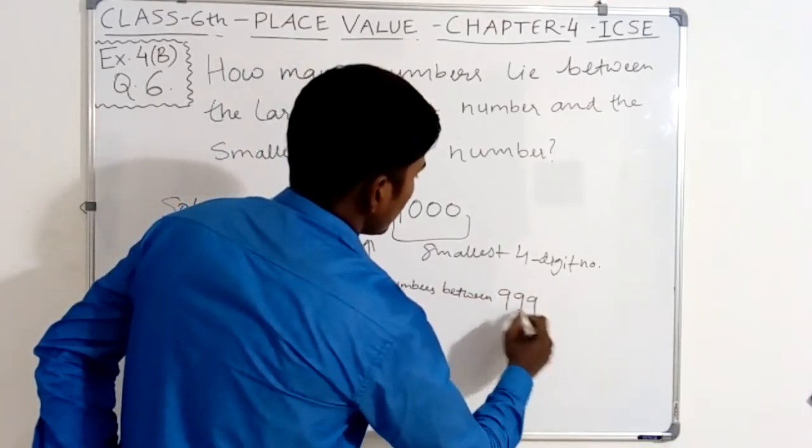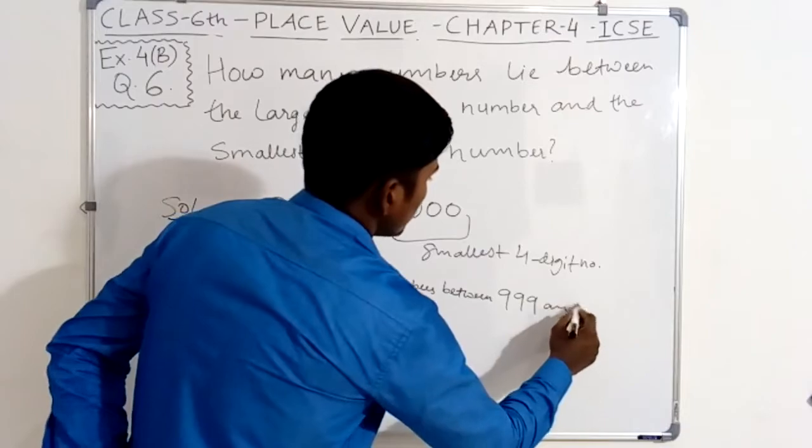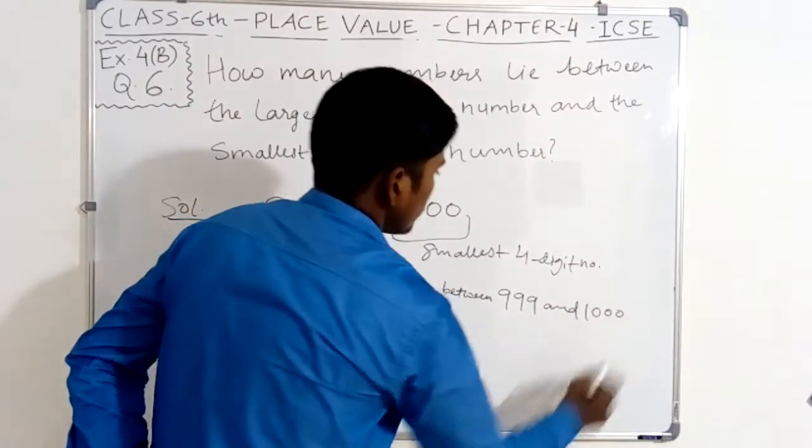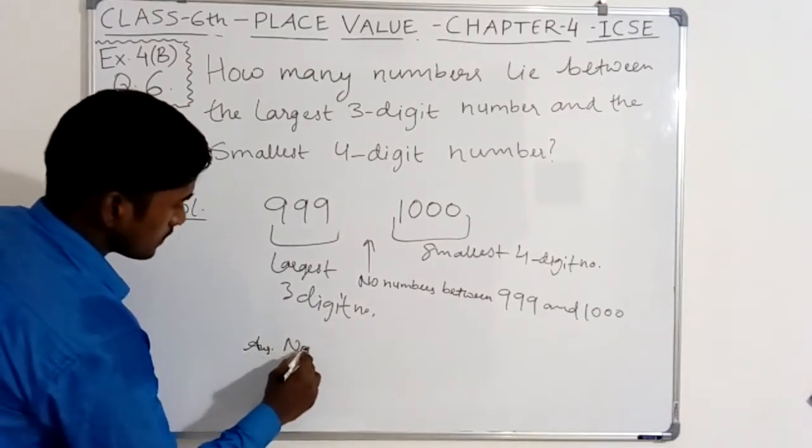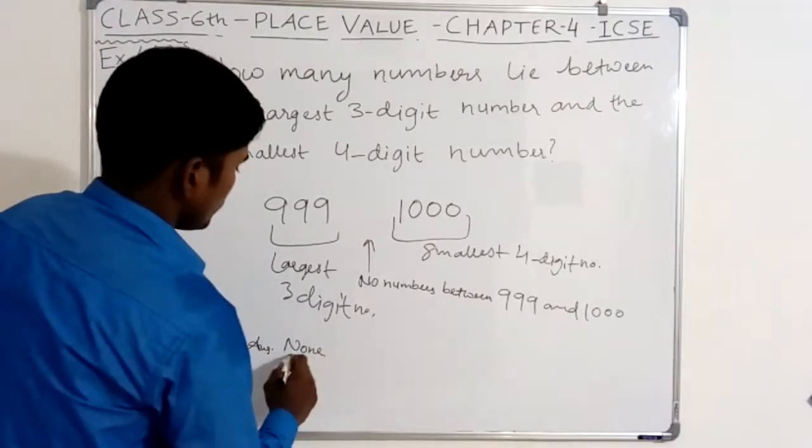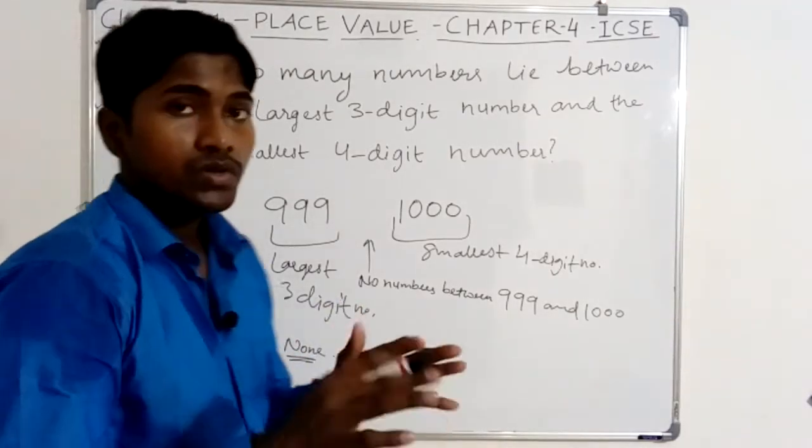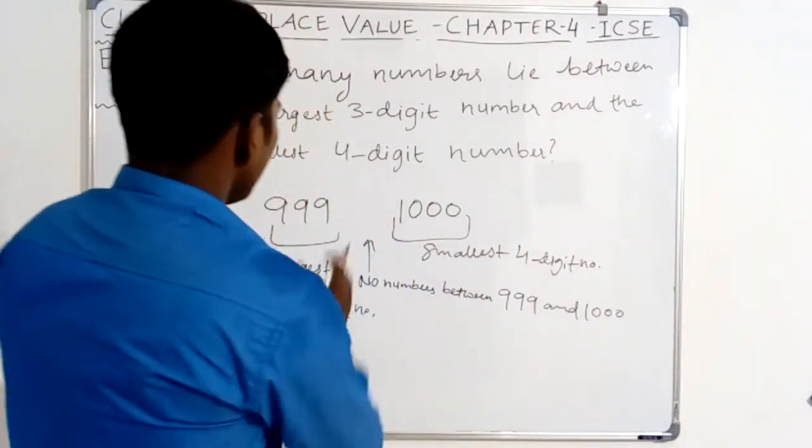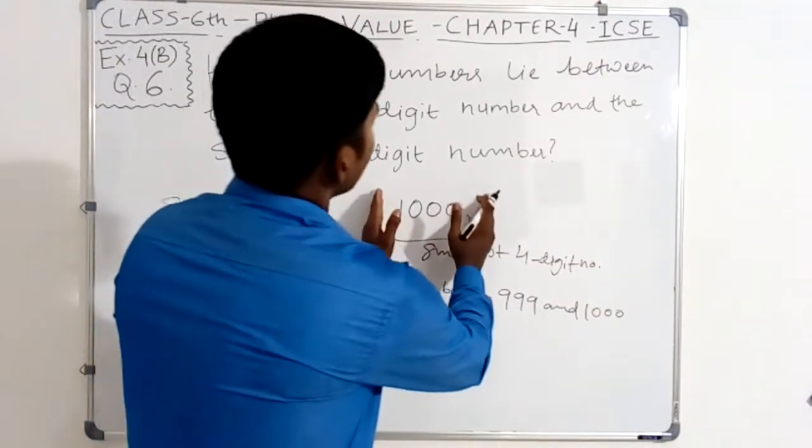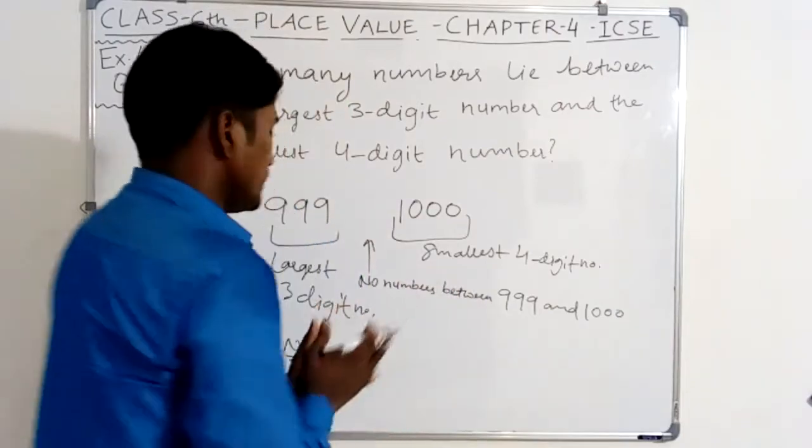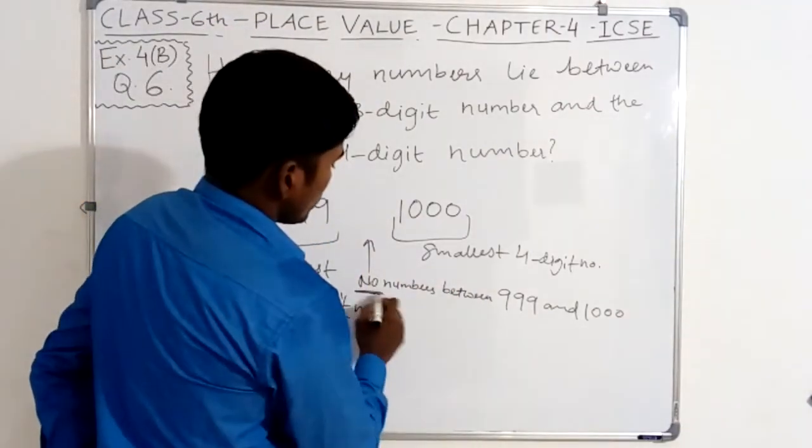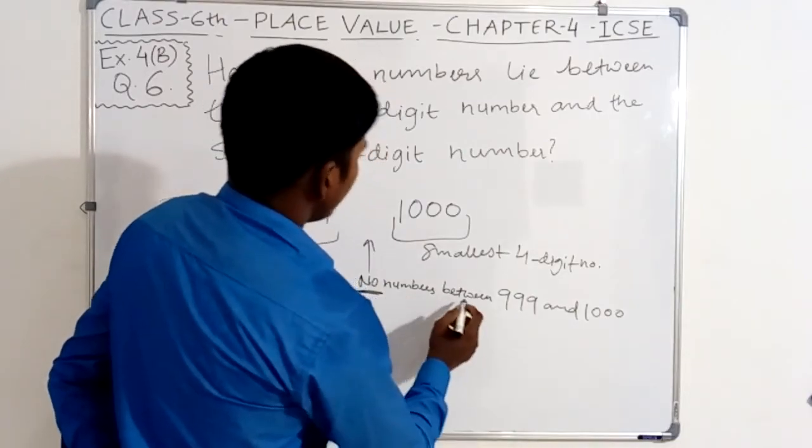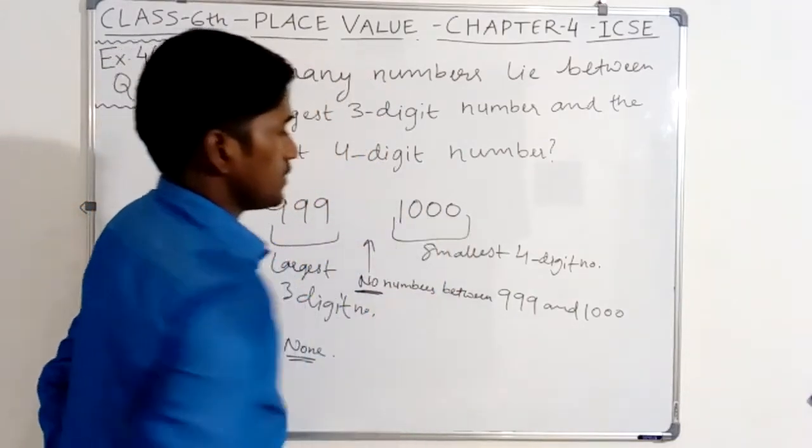Between 999 and 1000, there are no numbers. Not any numbers lie between 999 and 1000.